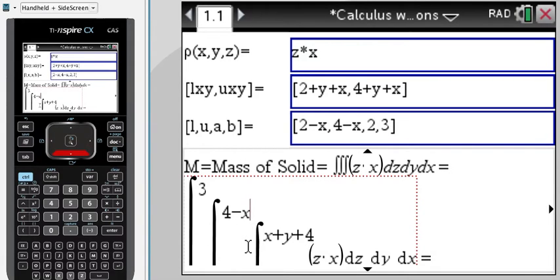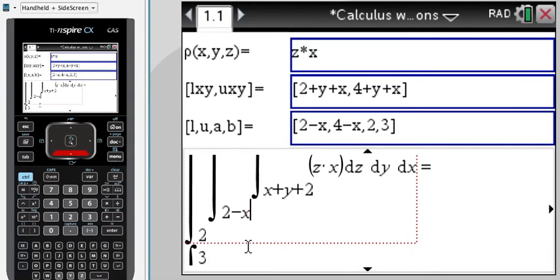Mass of solid m is found right here, also as a triple integral. You can see how the bounds change in terms of inner integral, in terms of x and y, then in terms of x, and then just a number.